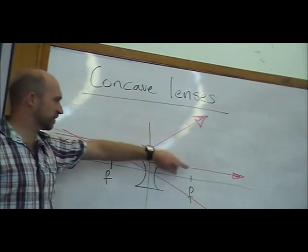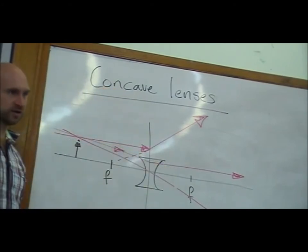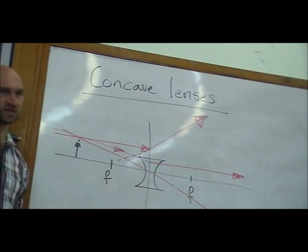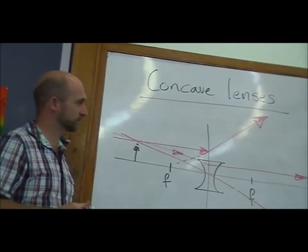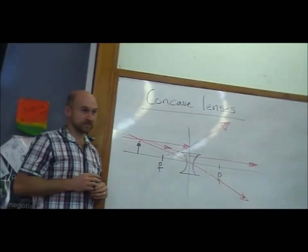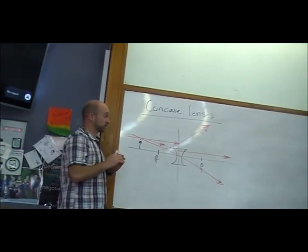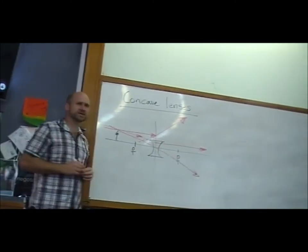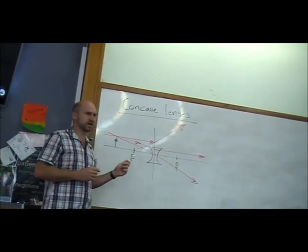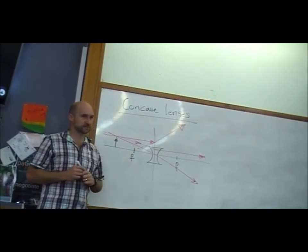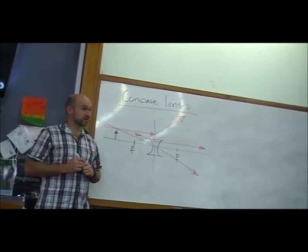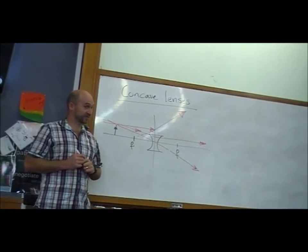What do we notice about these three rays on the real side of the lens, where the real light is really going? They don't converge. They are diverging rays. So, where is our image going to be formed with a concave lens? Imaginary. On the left side. Imaginary. Virtual? Virtual. Virtual.